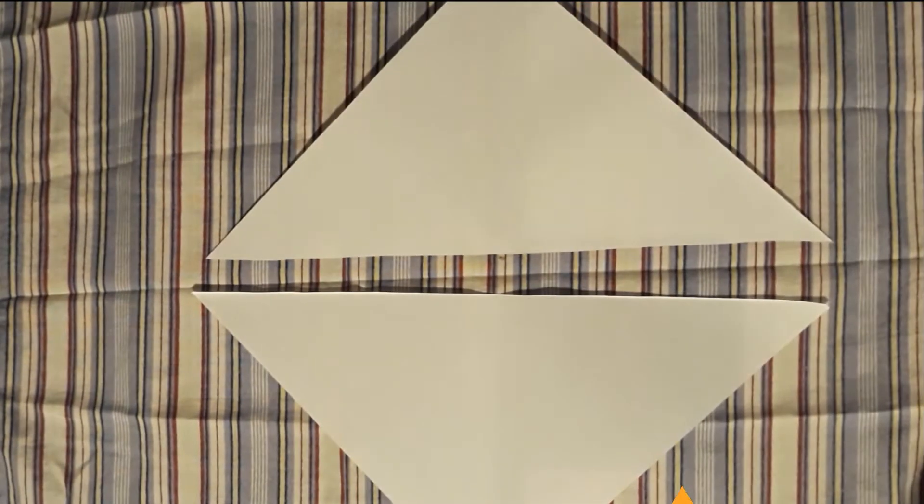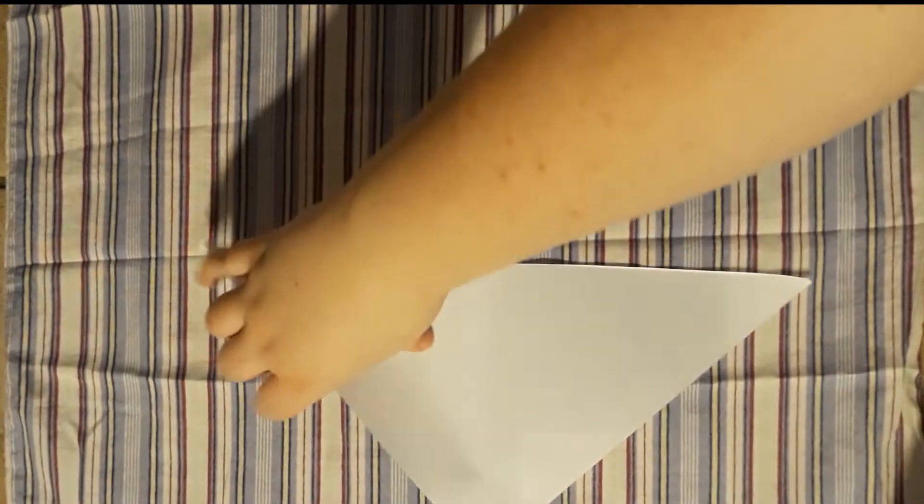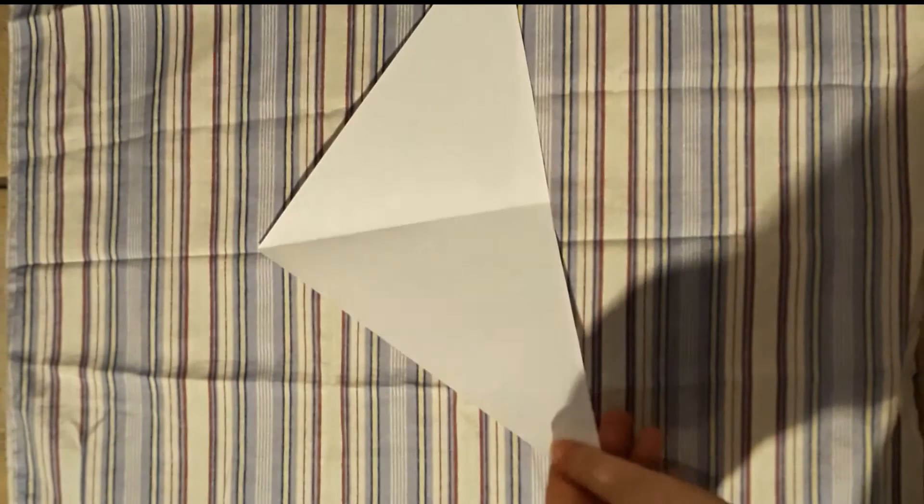Now you should have two triangles. Set one of your triangles to the side. Take one of the triangles and cut along the crease, creating two triangles, like I'm doing here.